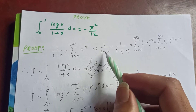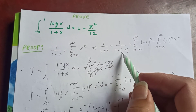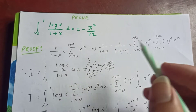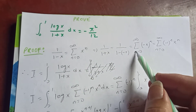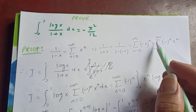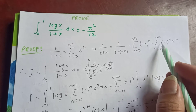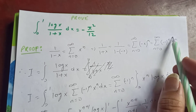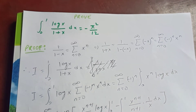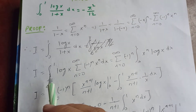The minus minus becomes plus again, so 1 over (1 + x) equals the sum from n equal to 0 to infinity of (−x)^n, which is the sum from n equal to 0 to infinity of (−1)^n x^n.